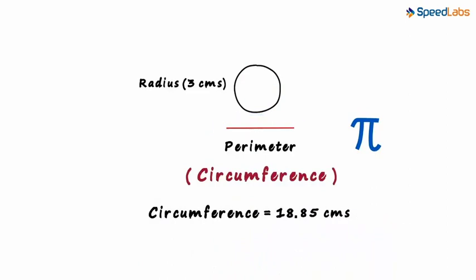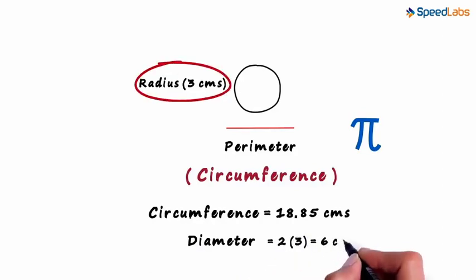The next thing we need to find out is the diameter of the circle. The diameter of a circle is twice its radius. Hence the diameter will be 2 multiplied by 3 which equals 6 centimeters.